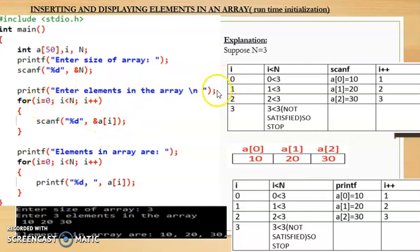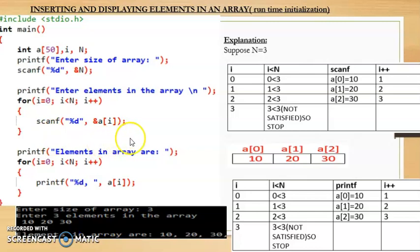First i is 0, it checks is 0 less than 3 — yes. Say the user enters 10, it is stored in a[0]. Then i increments to 1, checks 1 less than 3 — yes — user enters 20, stored in a[1]. Then i becomes 2, checks 2 less than 3 — yes — user enters 30, stored in a[2]. Then i becomes 3, which is not less than 3, so the loop terminates. So 10 is stored at a[0], 20 at a[1], and 30 at a[2] — values inserted using runtime initialization.